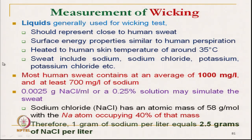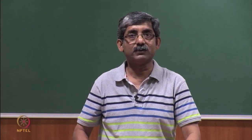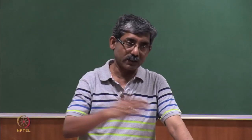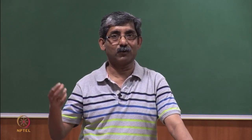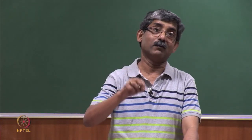The temperature of the system should be kept around 35 degrees Celsius, which is close to human skin temperature. Like wetting, wicking also has specific terms to express. The amount of water wicked, AWW, in grams per gram of fabric, determines the wicking capacity of fabric away from the absorption zone — that is, transporting the liquid from one zone to another zone.